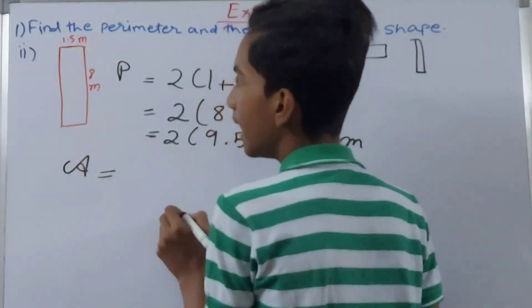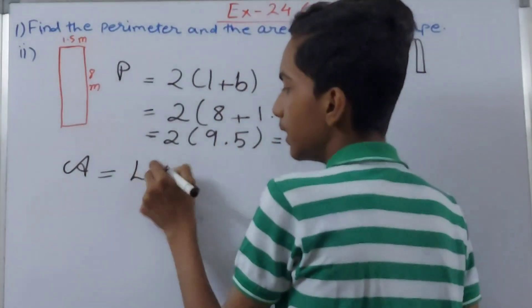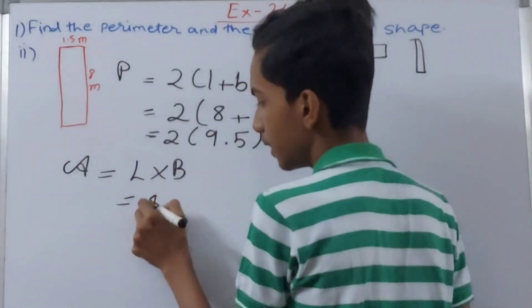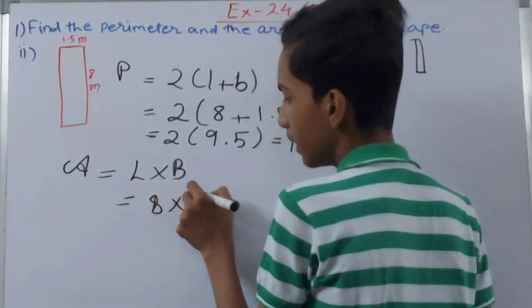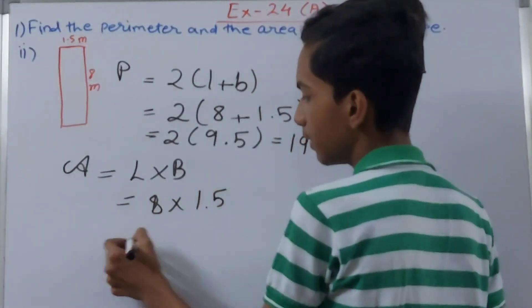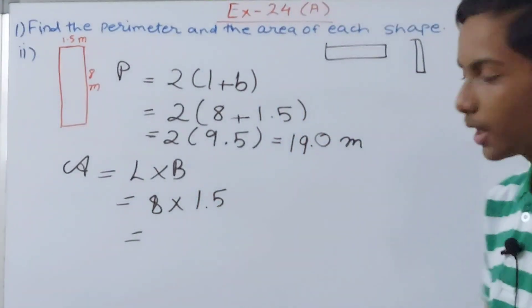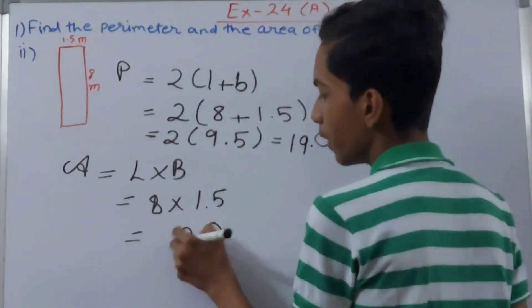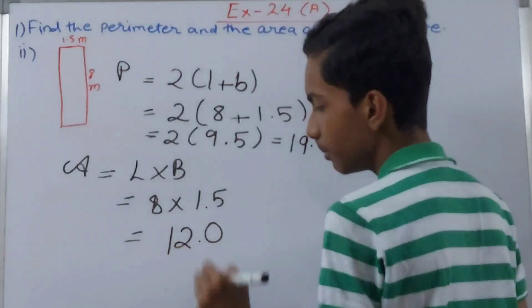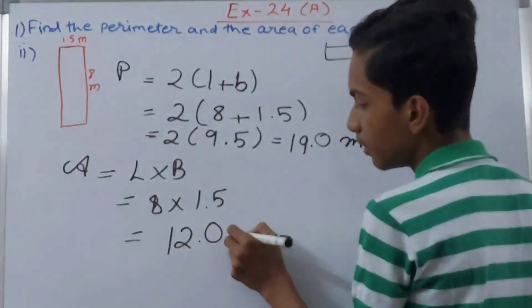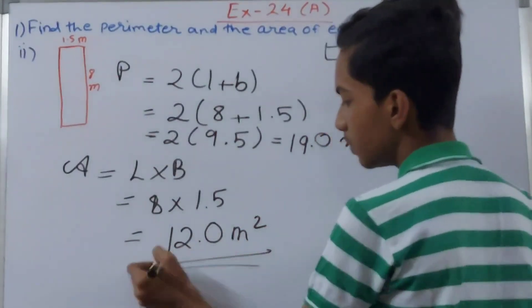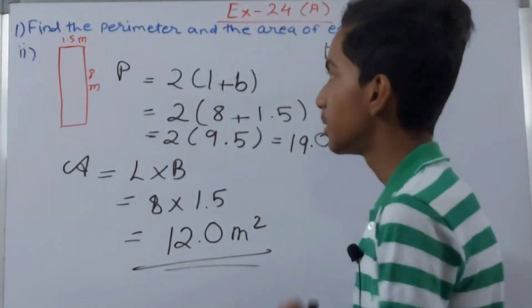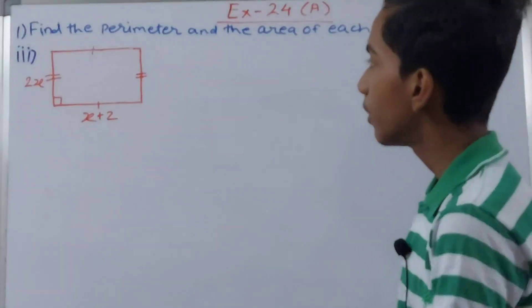For area I will simply write area here. Area again l times b. L is 8 times b is 1.5. Let's multiply this thing. So this will be 12, and decimal point after one place, so 12 square meter. If the unit is meter then square meter, if centimeter then square centimeters. This becomes the area.